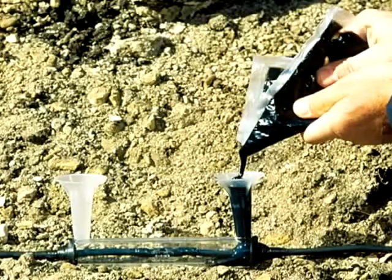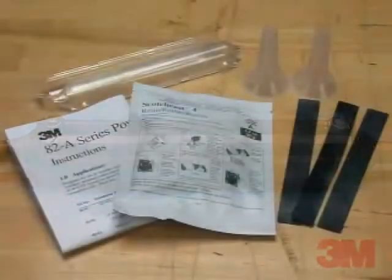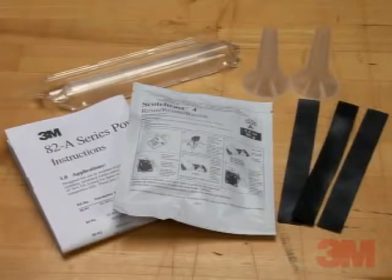Use the 3M Scotchcast brand inline resin splice kit 82A series to insulate and seal single conductor unshielded cable splices up to 5kV and multiple conductor cables through 1kV.